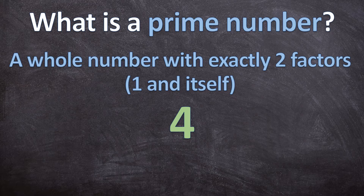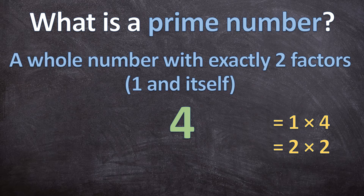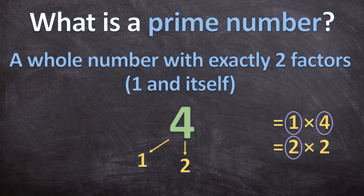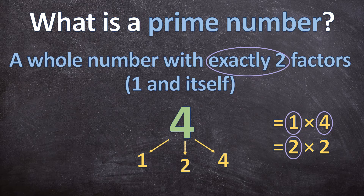Now let's look at 4. What whole numbers can we multiply together to have 4 as an answer? First, 1 times 4 equals 4, but also 2 times 2 equals 4. So 4 has more than 2 factors — it has 1, 2, and itself 4. So 4 doesn't have exactly 2 factors, so it is not a prime number.